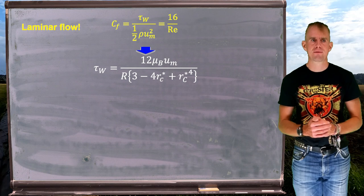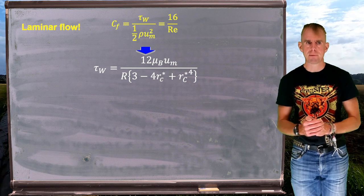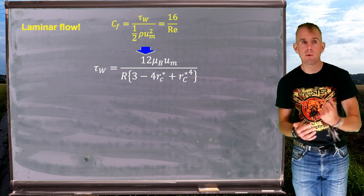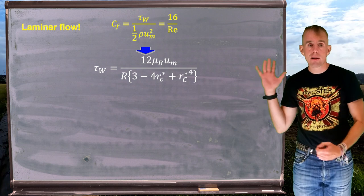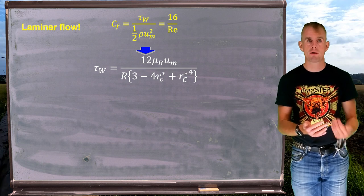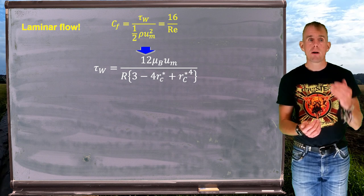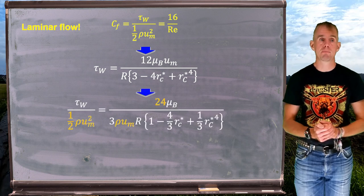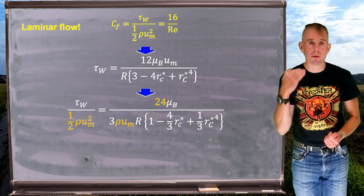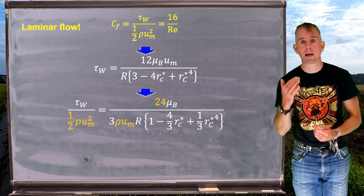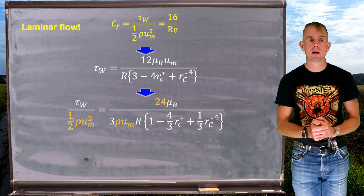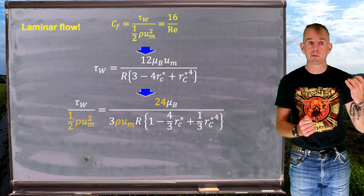Let's develop this analysis for a Bingham fluid. On the previous slide we saw an expression for mean velocity u_m which also involved τ_w. The result in white on the board is just a rearrangement of that expression now in terms of wall shear stress τ_w. What I'm now going to do is divide this result by one-half ρu_m². u_m appears in the numerator so that term will cancel, leaving u_m in the denominator.